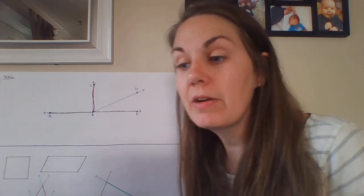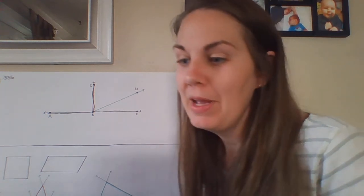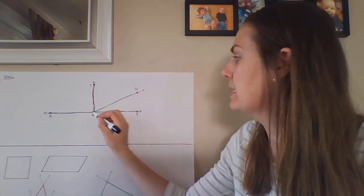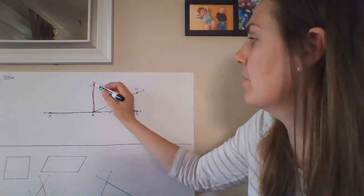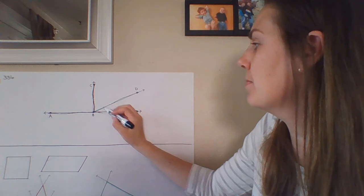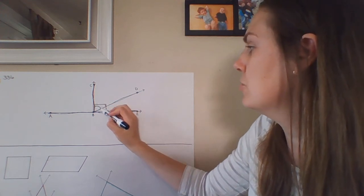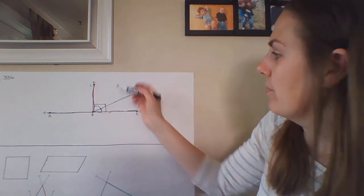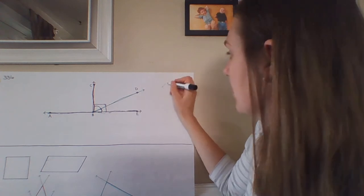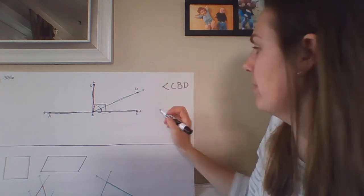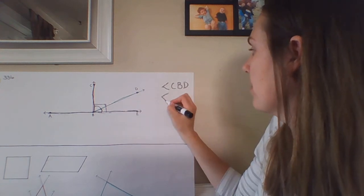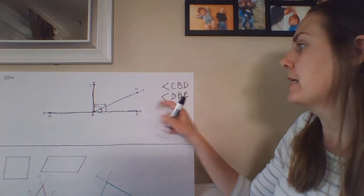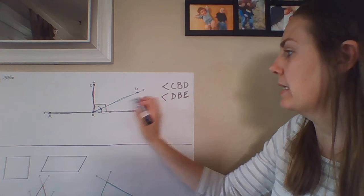Number 9: an angle smaller than a right angle is called an acute angle. We have two acute angles created by splitting up the right angle: angle CBD and angle DBE. Since we know the full angle is 90 degrees, both parts are less than 90 degrees. Number 10: an angle wider than a right angle but not a straight line is called an obtuse angle. Angle ABD would be an obtuse angle in this figure.